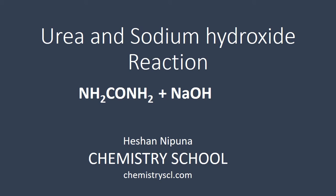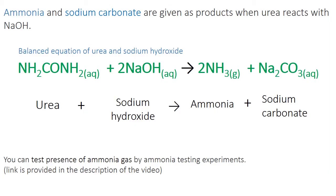Hello everyone, welcome for another video of Chemistry School. In this tutorial, we are going to learn the reaction of urea and sodium hydroxide. When urea reacts with sodium hydroxide, ammonia and sodium carbonate are given as products.